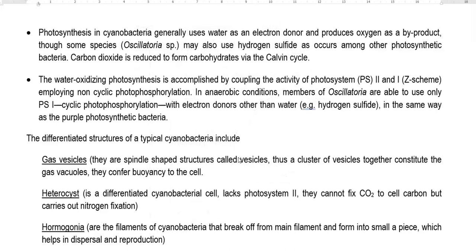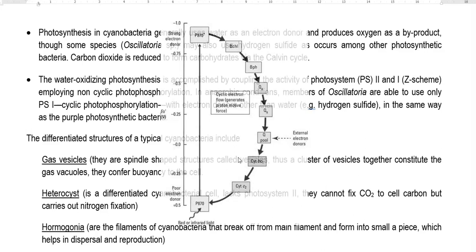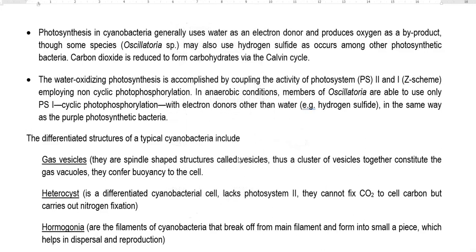When cyanobacteria grow under anaerobic conditions and use hydrogen sulfide as an electron donor — as in certain groups like Oscillatoria — only Photosystem I is involved in phosphorylation. This type is technically referred to as cyclic photophosphorylation, similar to that occurring in some anoxygenic groups of purple photosynthetic bacteria.